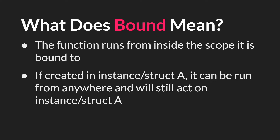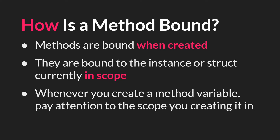Now that we know how to create a method variable, let's talk more about what "bound" means. For a function to be bound means that the function runs from inside the scope it is bound to, regardless of who calls it. So if a function is created inside of instance A or struct A, it can be run from anywhere — assuming you reference the variable that holds it appropriately — but it will still act on the instance or struct that it's bound to. This is the opposite of script functions declared inside a script asset; those unbound functions will run in the scope of whatever instance or struct calls them. Methods are bound when they are created, and they are bound to the instance or struct currently in scope, so whenever you create a method variable you need to pay attention to the scope that is currently active.